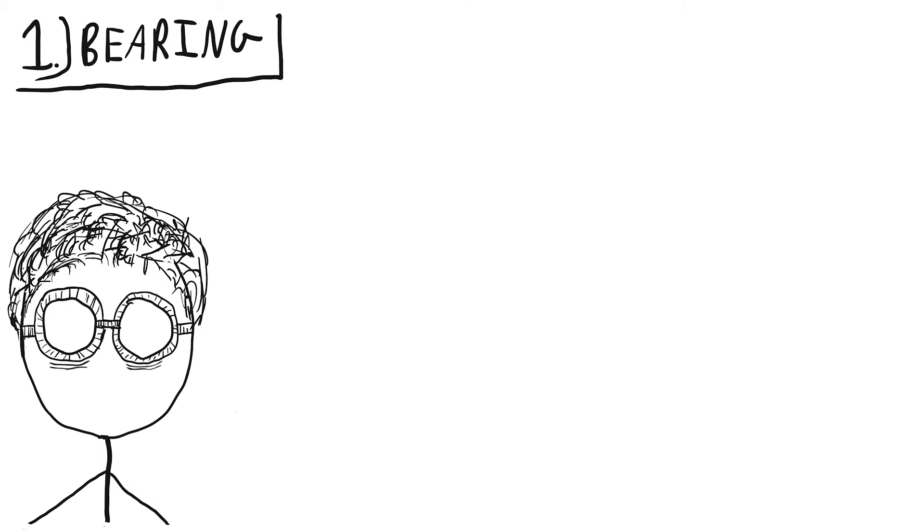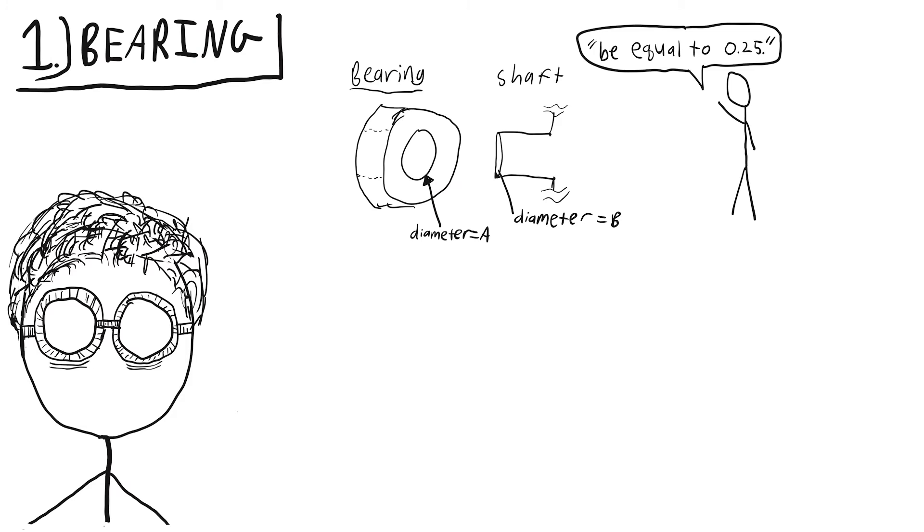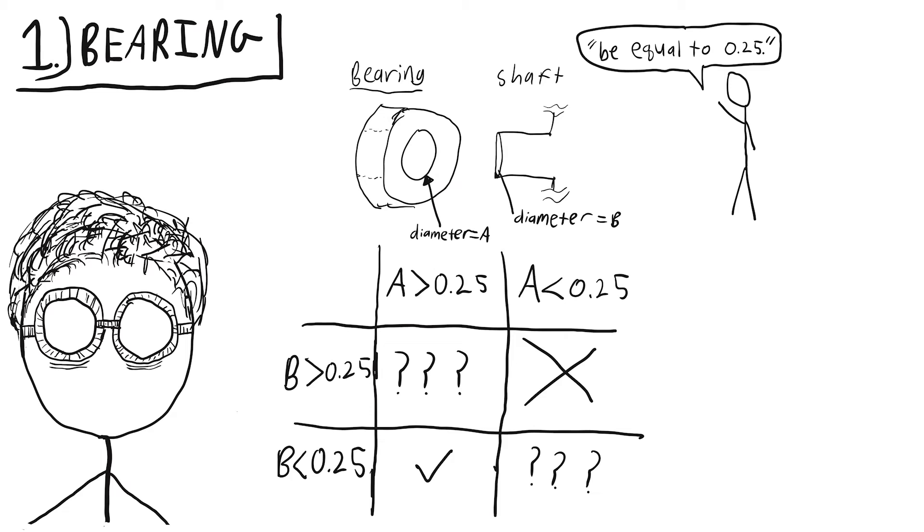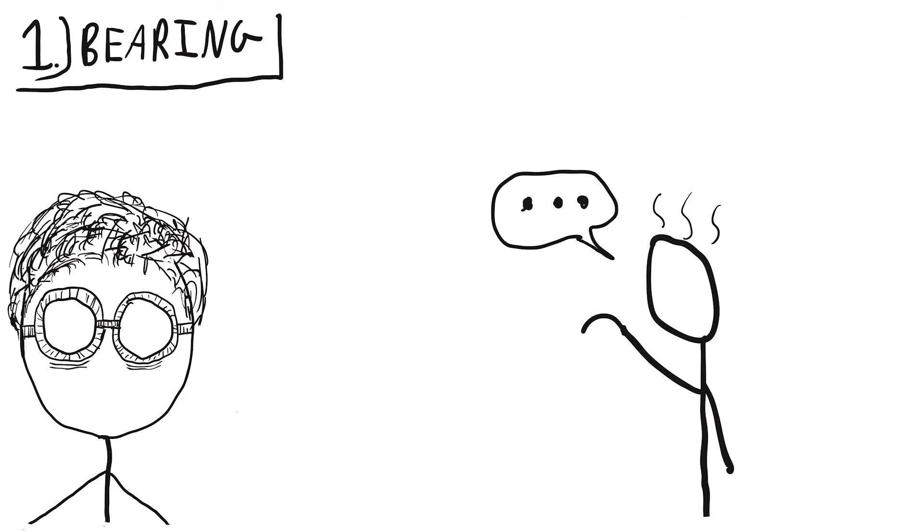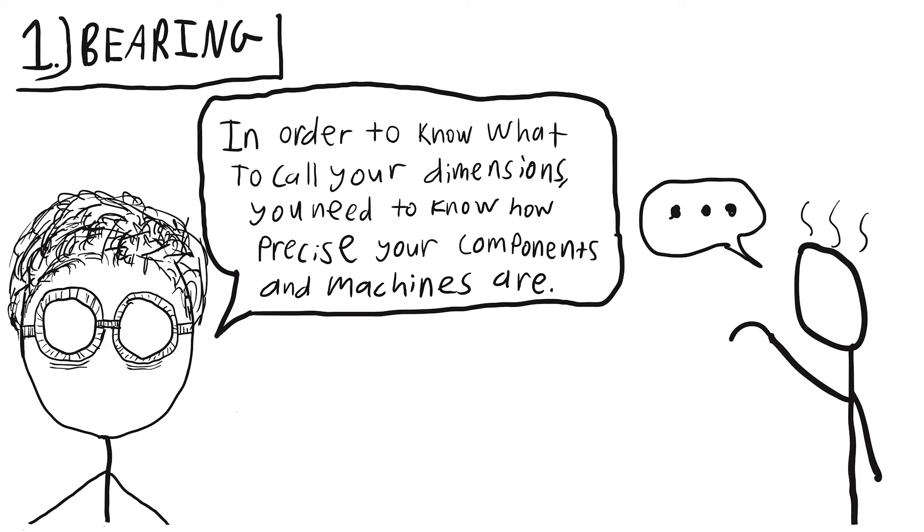Because as it turns out, yoyos need to be made to a very high precision in order to perform consistently well, especially for the guts of the yoyo. If you design the inner hole of your bearing and the shaft on which it mounts to be the same diameter as one another, you would have a very bad time. In order to know what to call your dimensions out as, you need to know how precise your components and machines are.